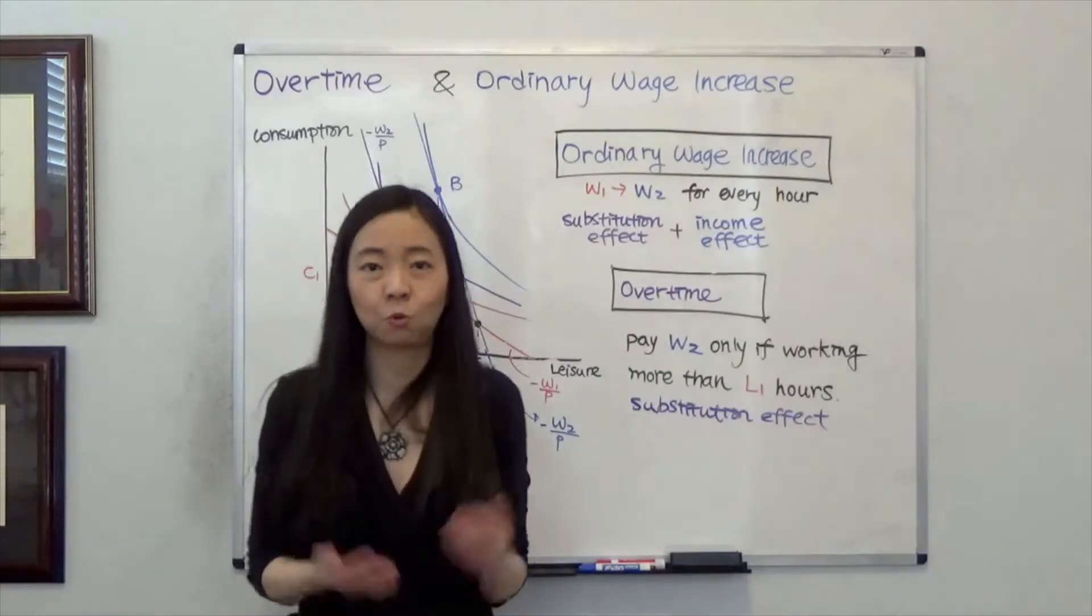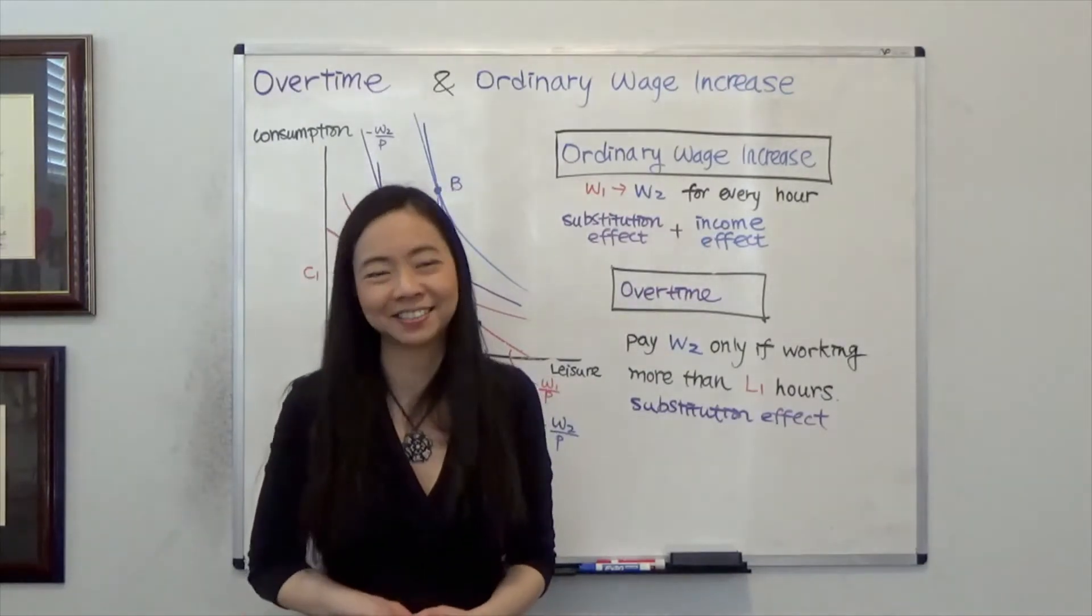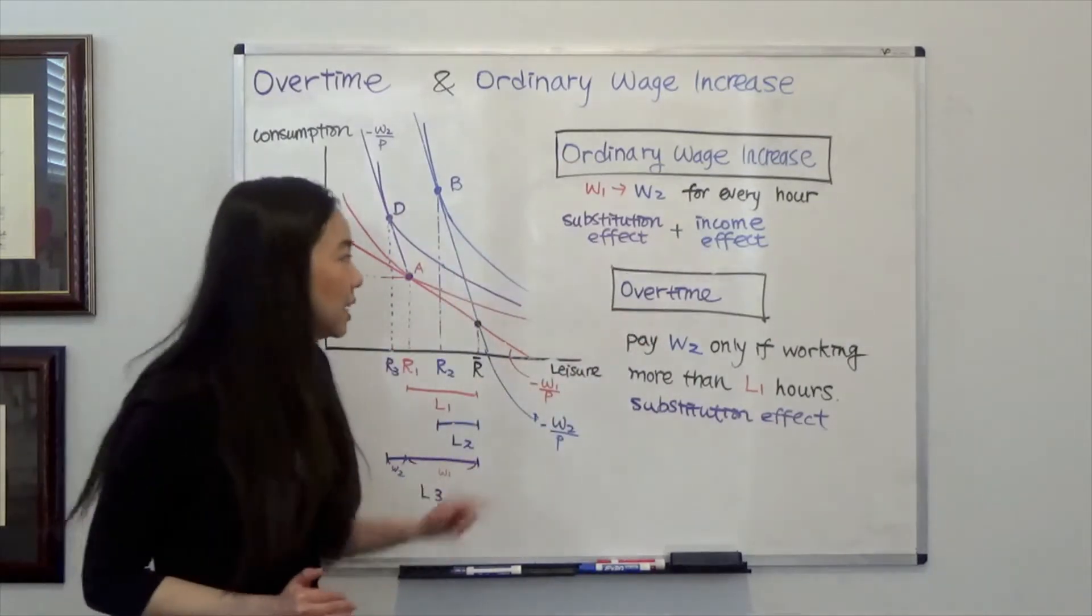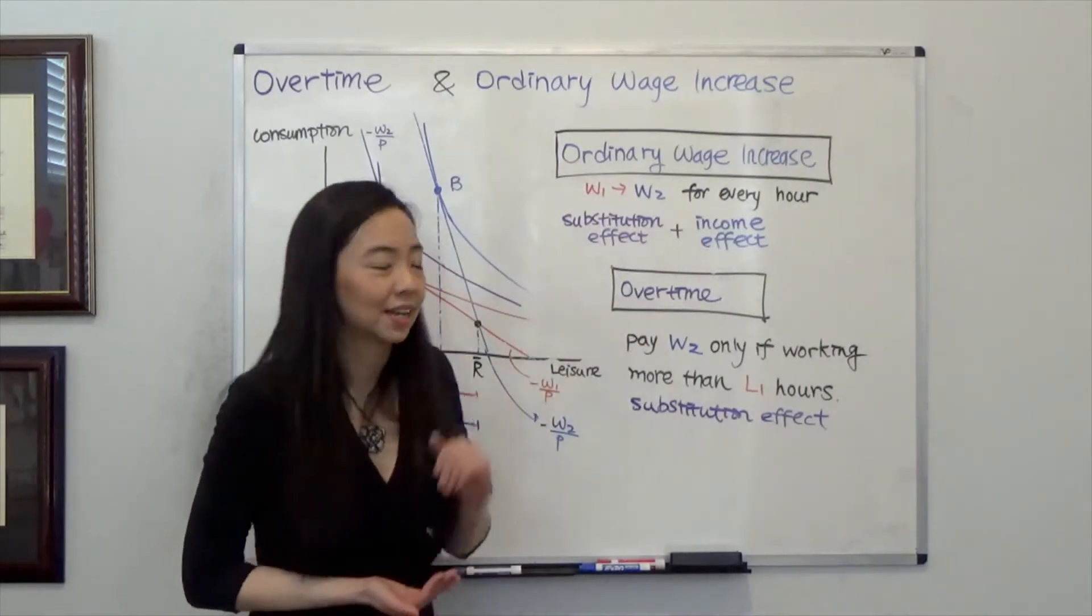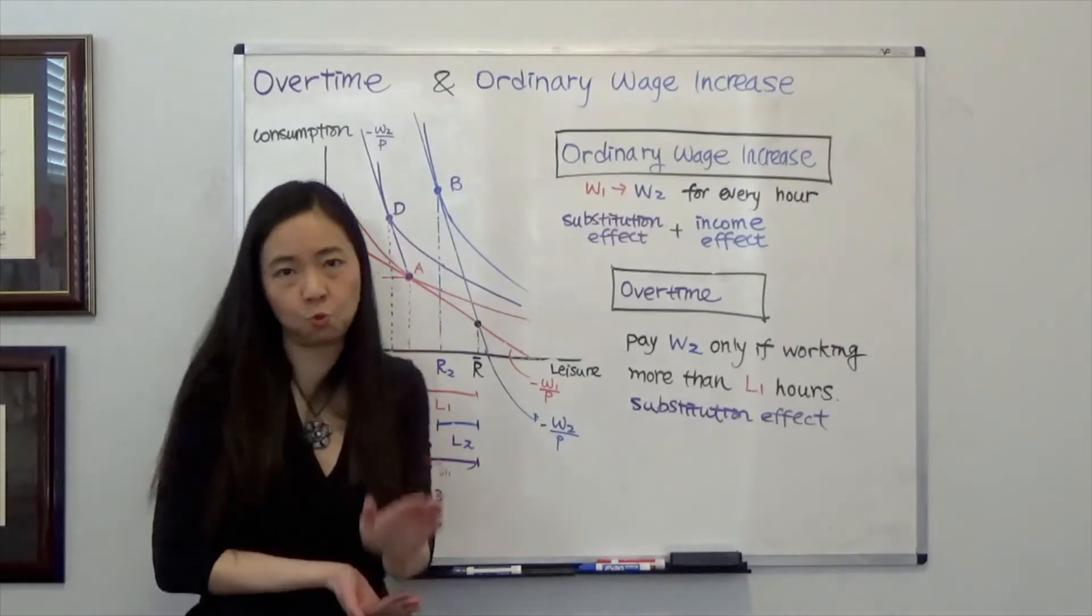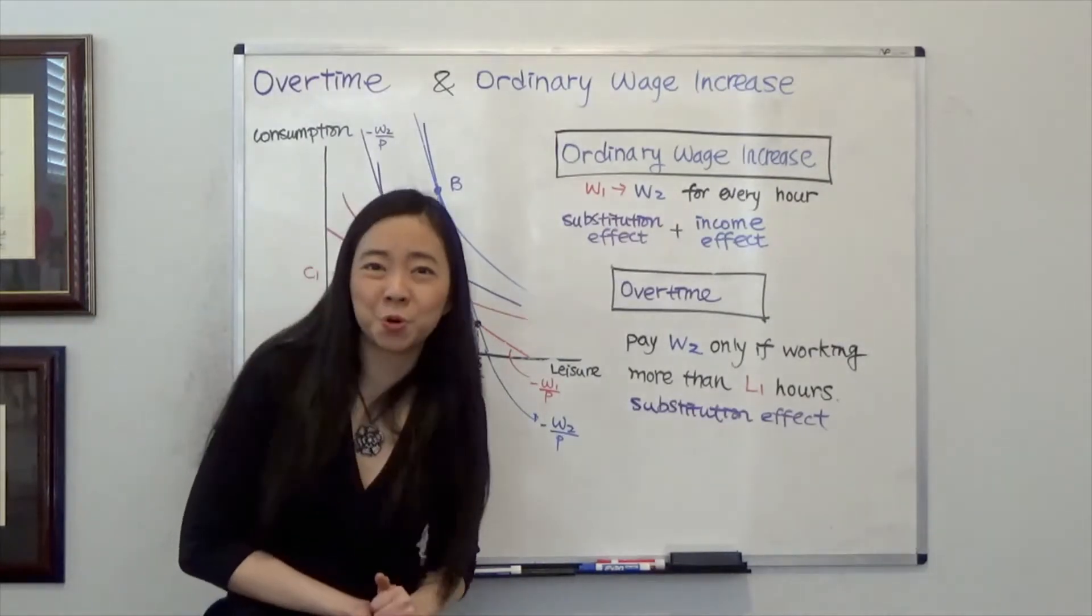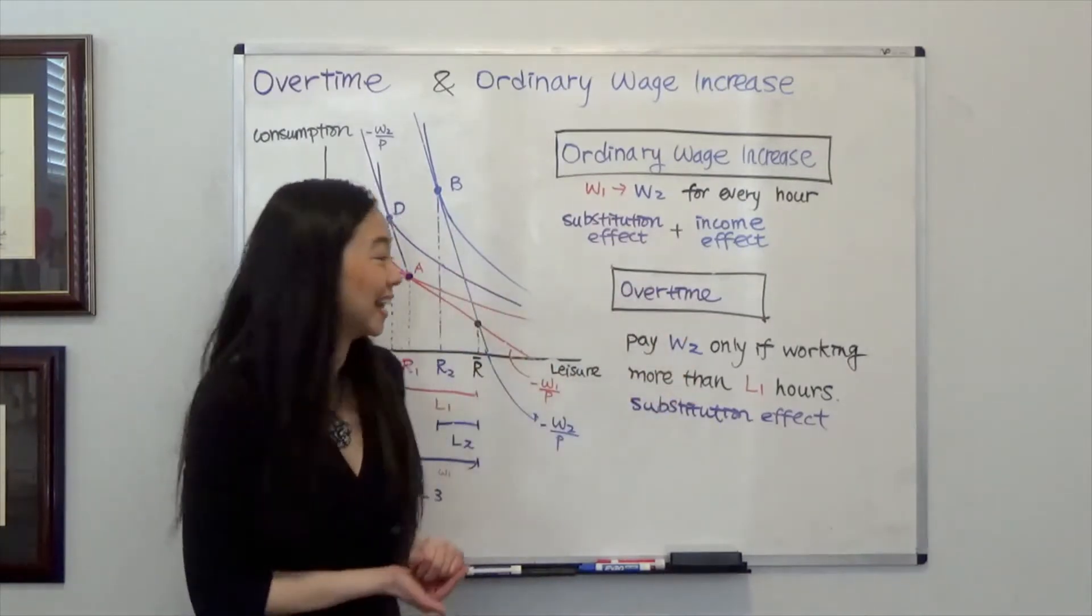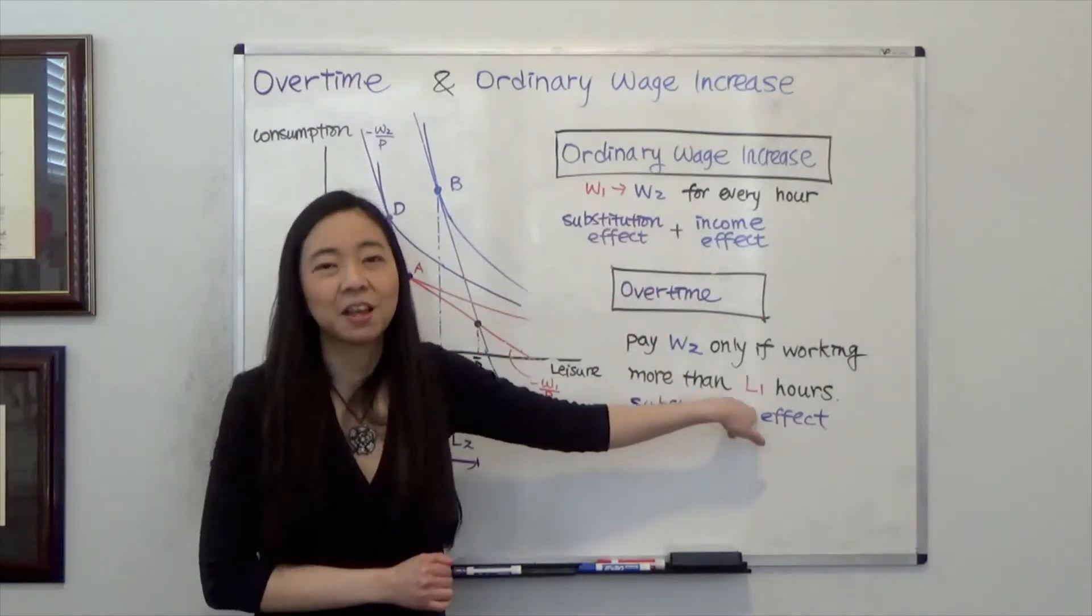Now, typically our employer would prefer us to work more, not less. So they divide this overtime. So what the employer is saying is this. Hey, I am going to pay your wage W1. But I am going to increase your wage to W2 if you work at least L1 hours. So for the first L1 hours,